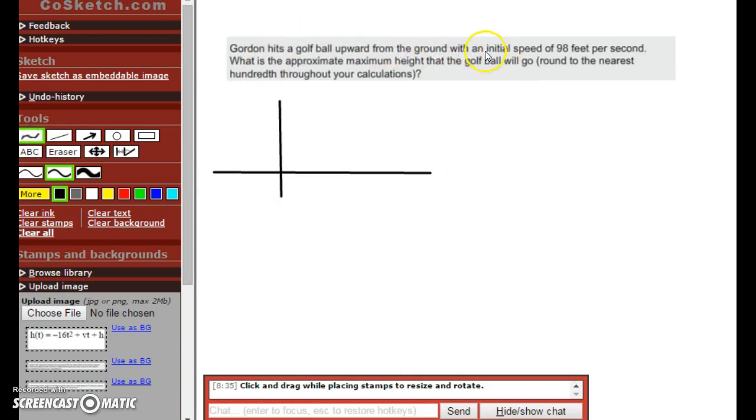It says he's hitting it from the ground, so our s, our initial height, is zero. So it's going up and it's going down. And v, initial velocity, is 98 feet per second. They want the maximum height here. So let's plug this into our equation. y = -16x² plus vx plus s.